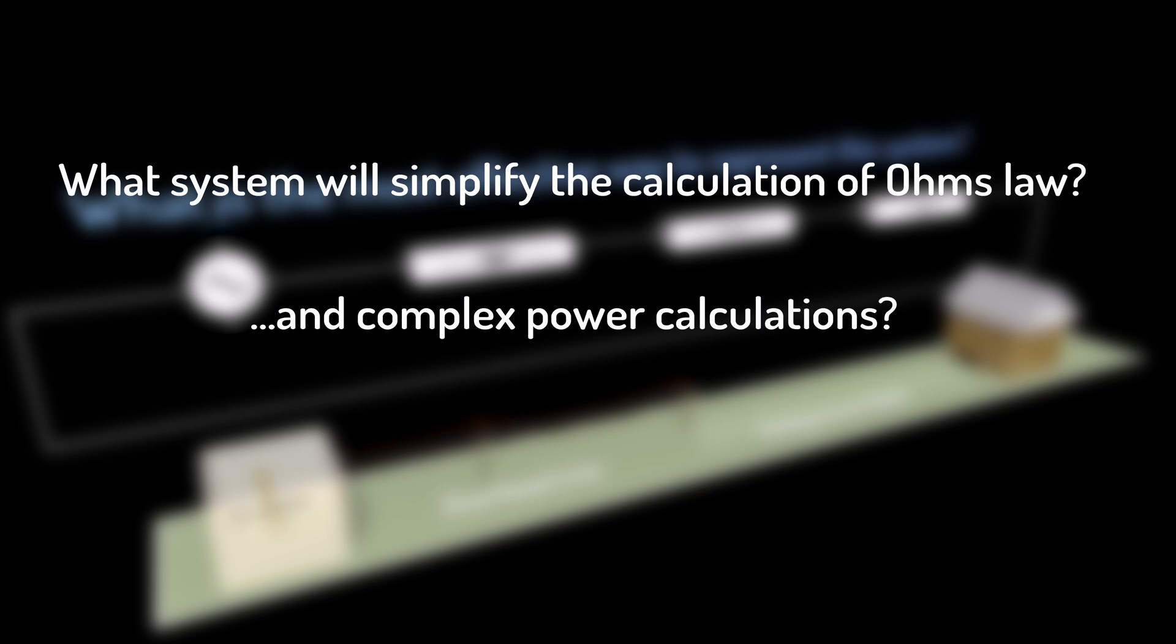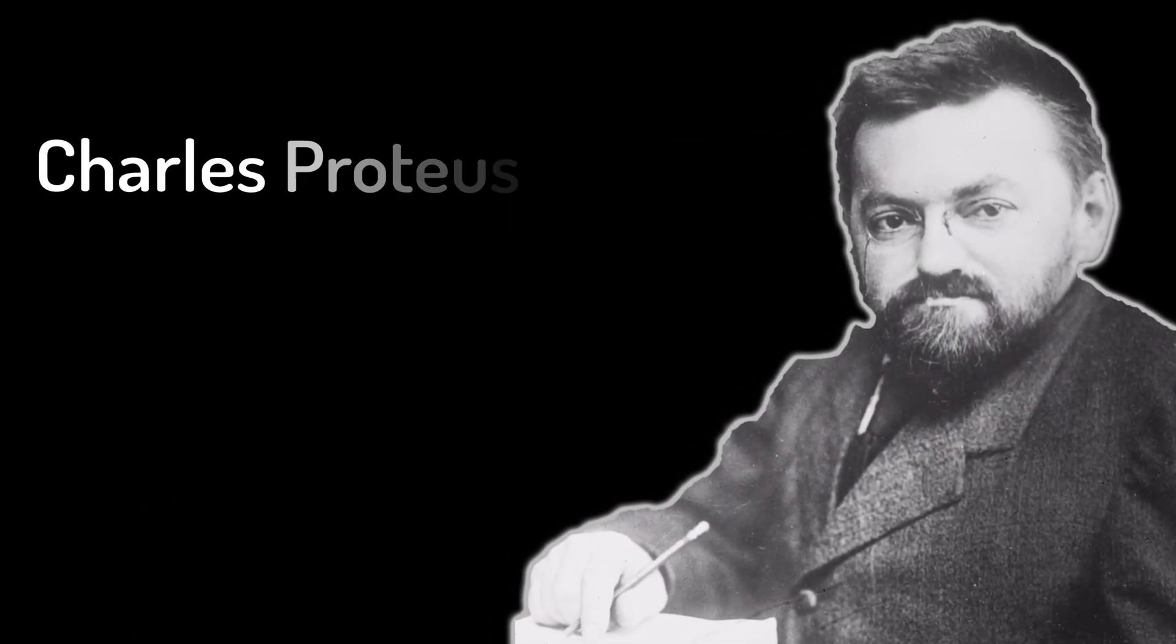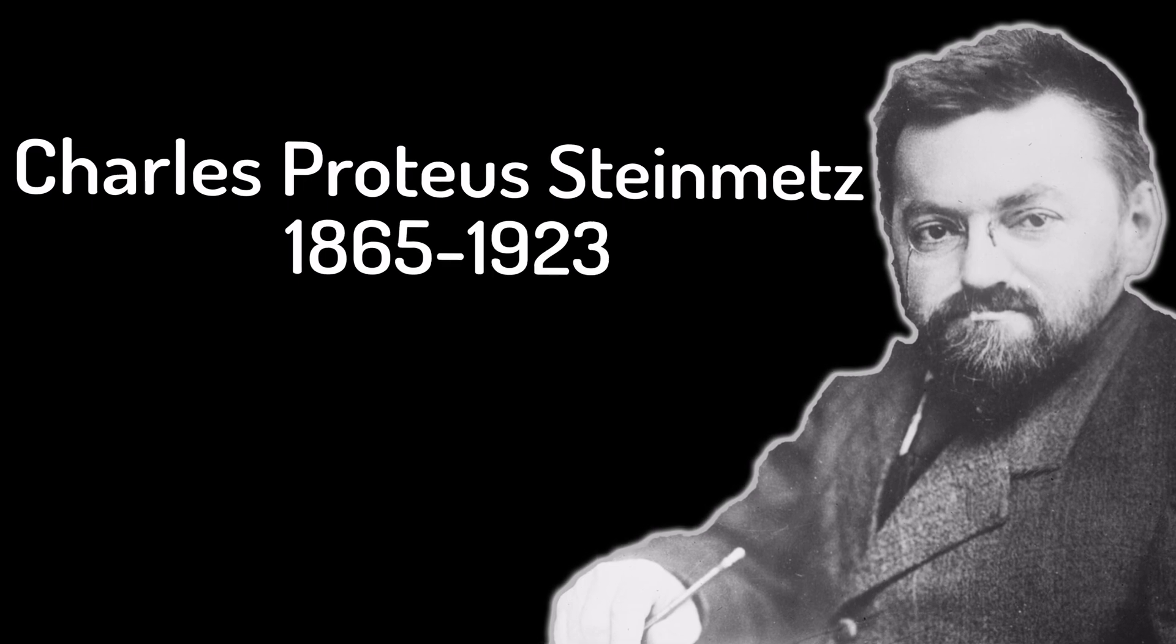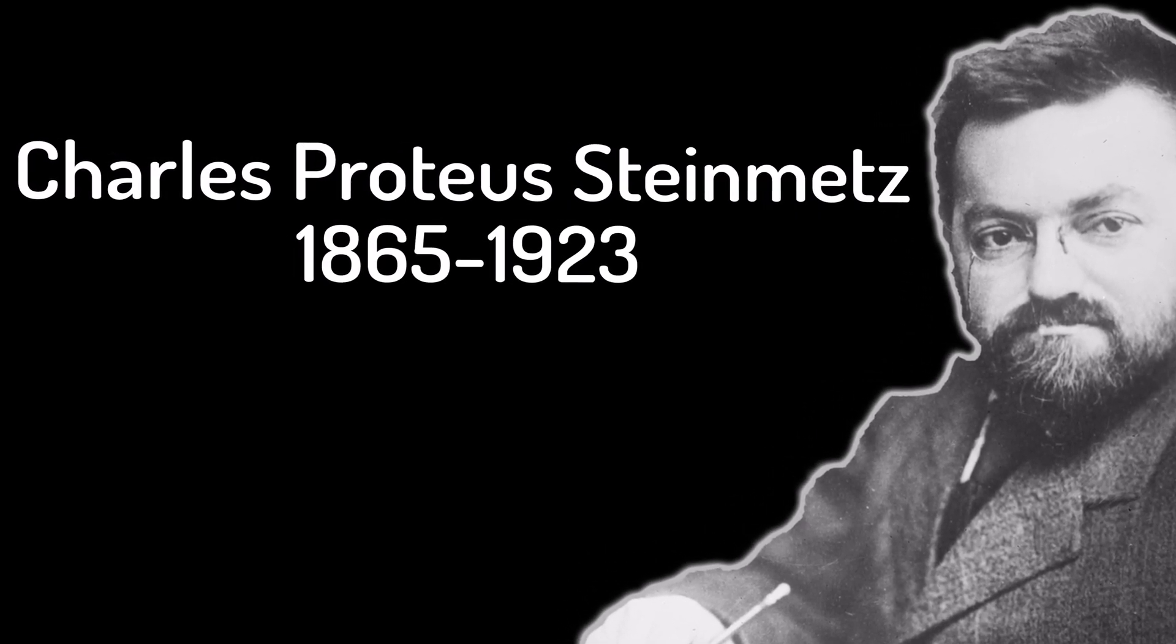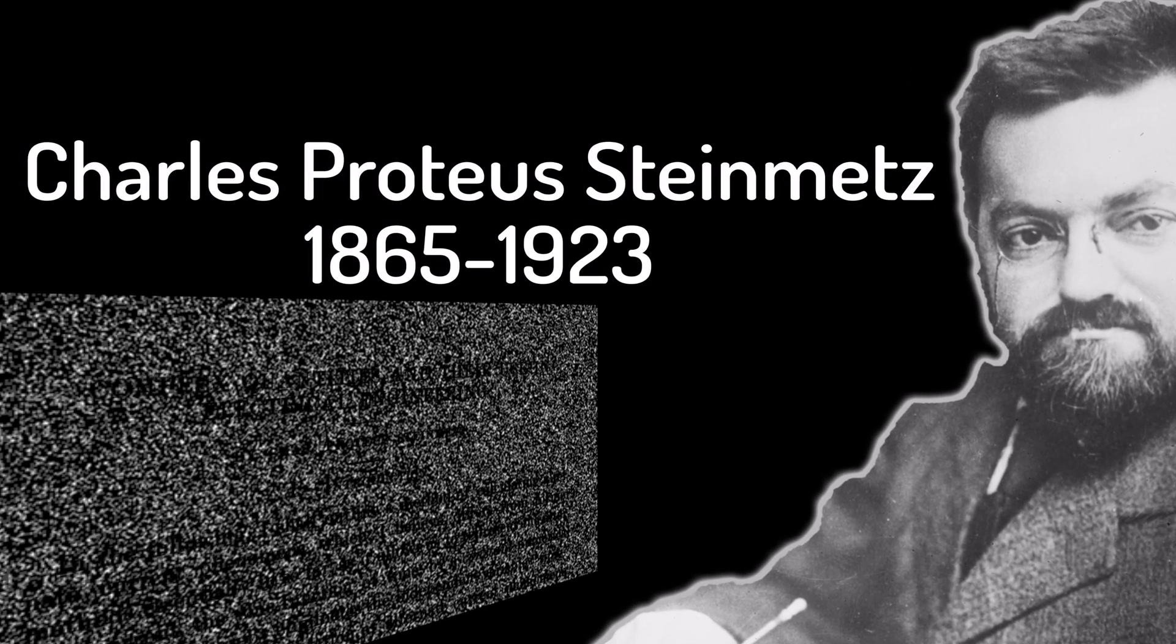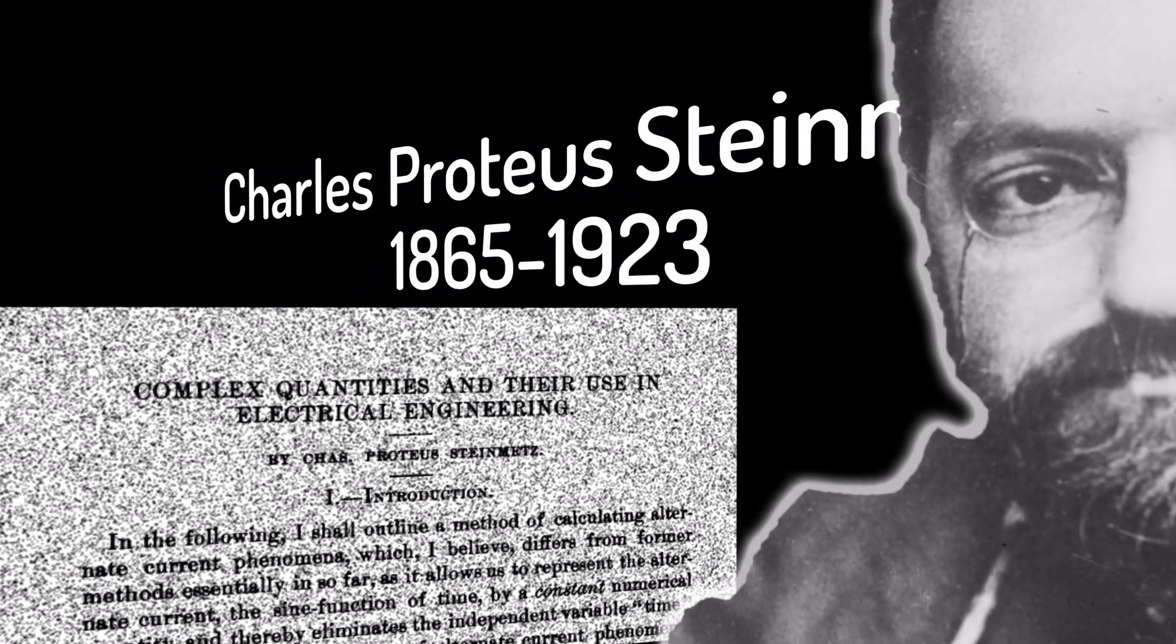In the 19th century this was done using trigonometric identities and calculus, which quickly became a quagmire of mathematical confusion. But in 1893, Charles Proteus Steinmetz proposed a completely new method for representing AC voltage and current.